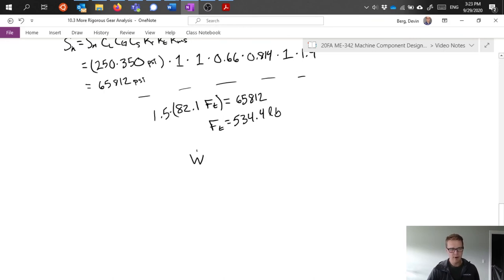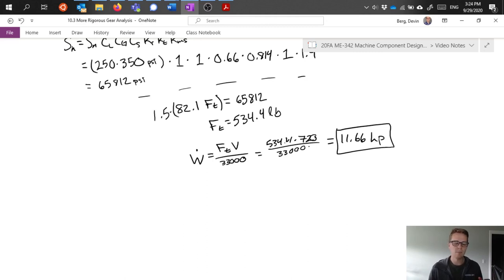From that I can calculate my power, which is equal to FT times V over 33,000. And I get 534.4 times my pitch line velocity that we calculated before and 33,000. This comes out to be 11.66 horsepower. So what this is saying is I can transmit up to 11.66 horsepower through my gear train, my gear set I should say, and presumably not fail in fatigue. And I have built in a safety factor of 1.5 into this.